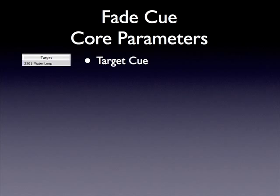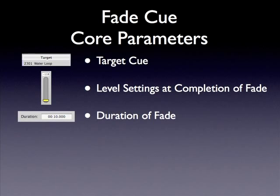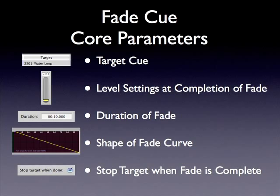This simple example demonstrates the core parameters of the fade cue: the target cue, the level settings at the completion of the fade, the duration of the fade, the shape of the fade curve, and the ability to stop the target cue when the fade is complete.